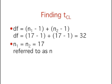The degrees of freedom is the number of independent estimates of variance on which MSE is based. This is equal to N1 minus 1 plus N2 minus 1, where N1 is the sample size for the first group, and N2 is the sample size of the second group. For this example, the degrees of freedom is 17 minus 1 plus 17 minus 1, which equals 32.